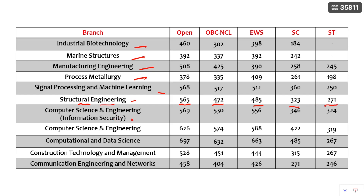For CSE with Information Security the cutoffs are Open: 569, OBC-NCL: 530, EWS: 556, HC: 346, HD: 324. CSE, one of the most demanded branches, has cutoffs of Open: 626, OBC-NCL: 574, EWS: 588, HC: 422, HD: 319. All other branches such as Computational and Data Science, Construction Technology and Management, and Communication Engineering and Networks are also listed here.